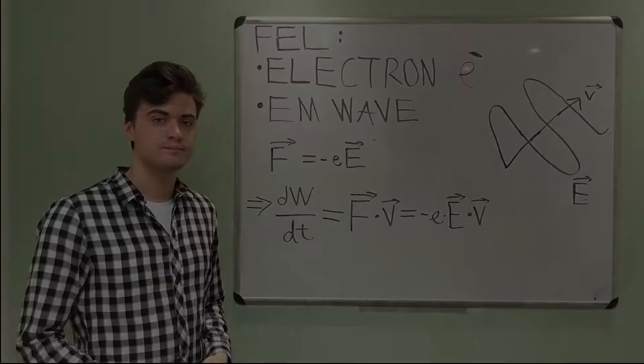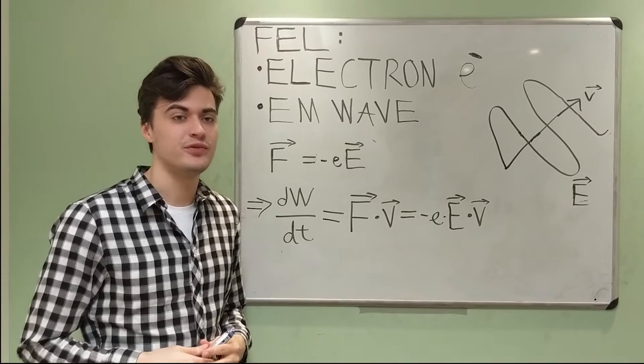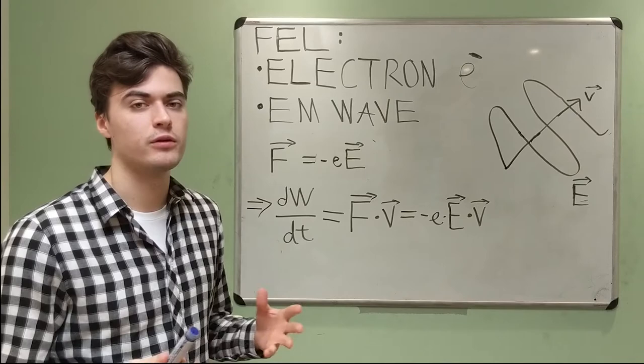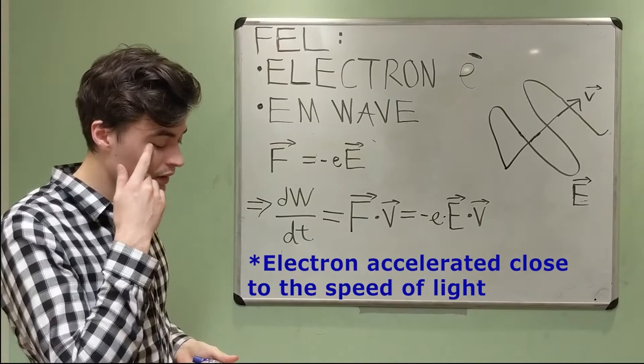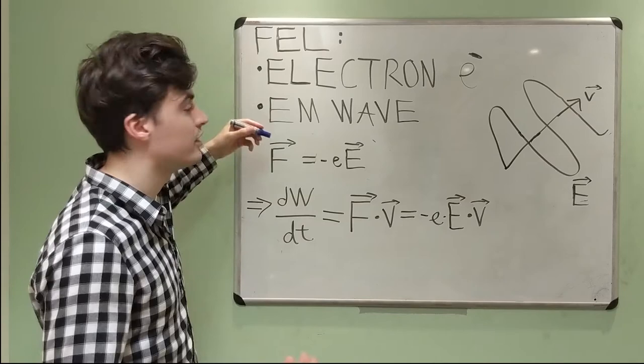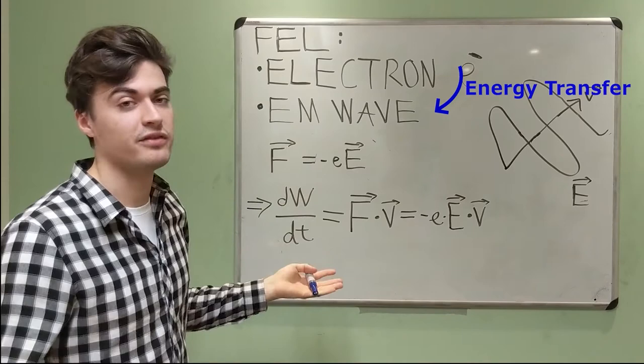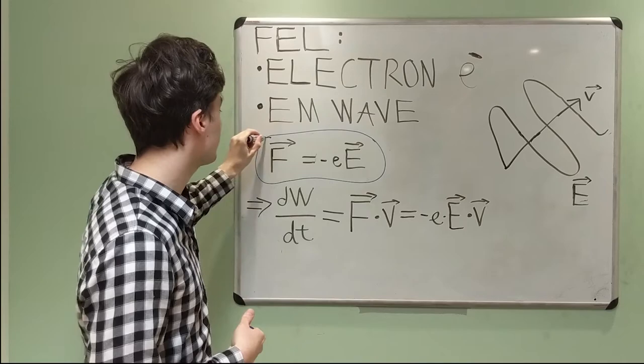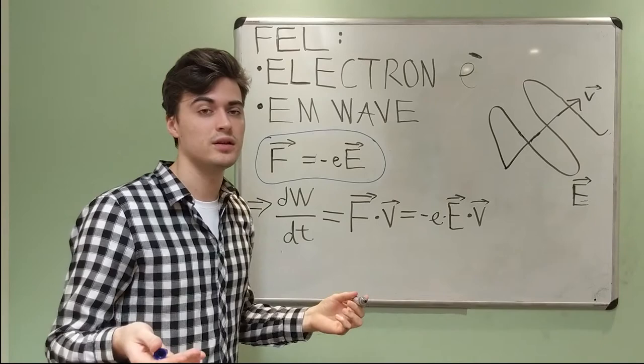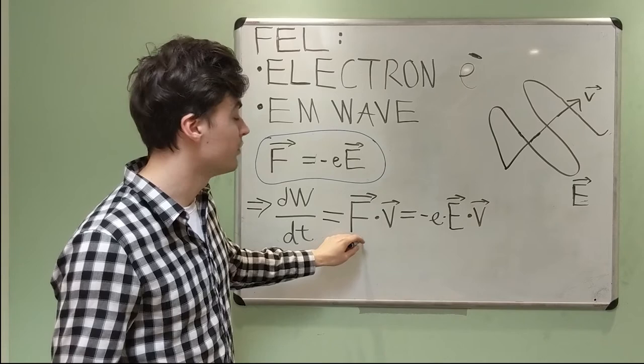To give you a quick crash course into free electron lasers, let's take a few minutes to talk about them. Free electron lasers, or commonly known as FELs, are fundamentally made up of two simple systems: an electron and an electromagnetic wave. Our end goal here is to have an interaction that transfers energy from the electron into an electromagnetic wave, basically amplifying it. To consider this interaction, we can consider a simple electrostatic interaction given by the formula here. With this force, we have that the work done on the electron is given by the equation here. It's just a dot product between the force of the electric field and the velocity of the electron.